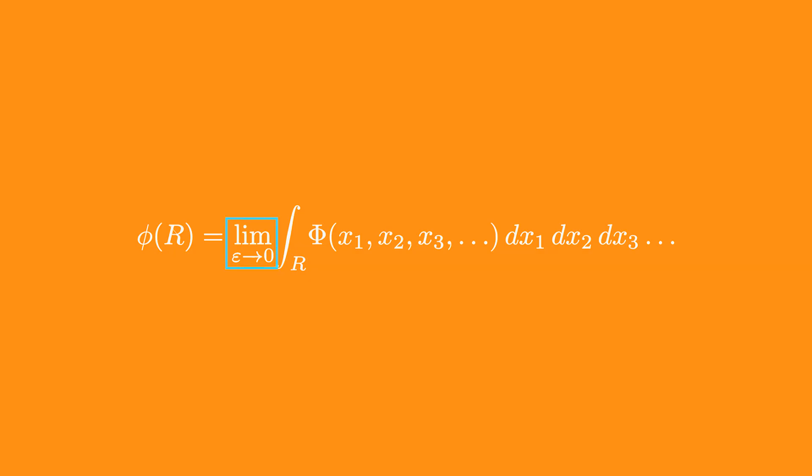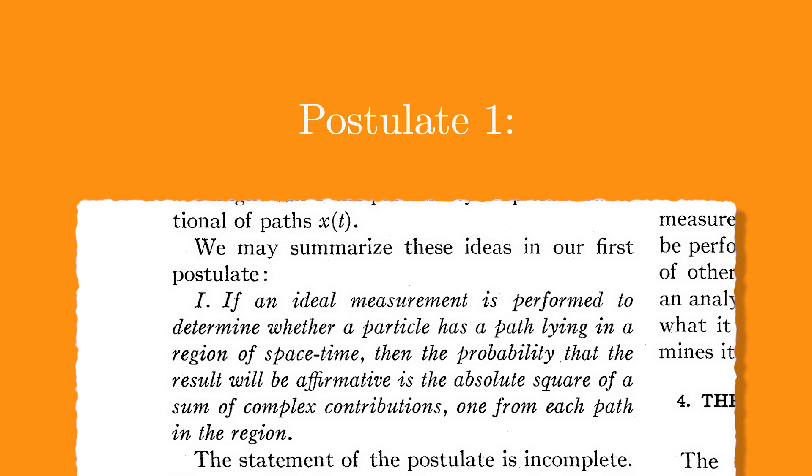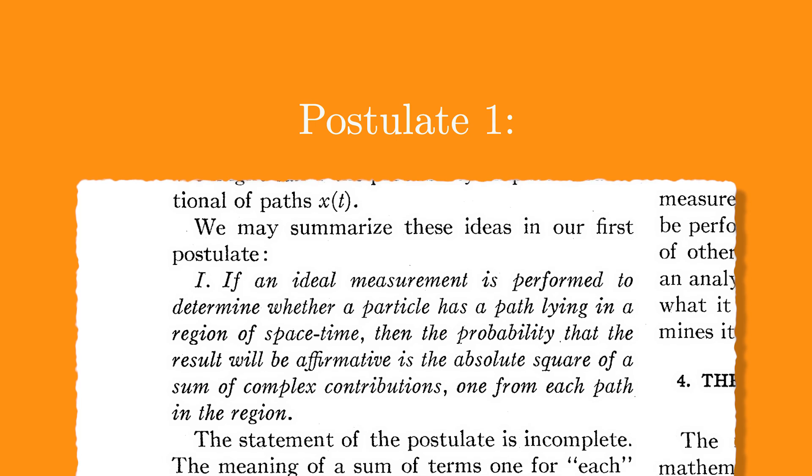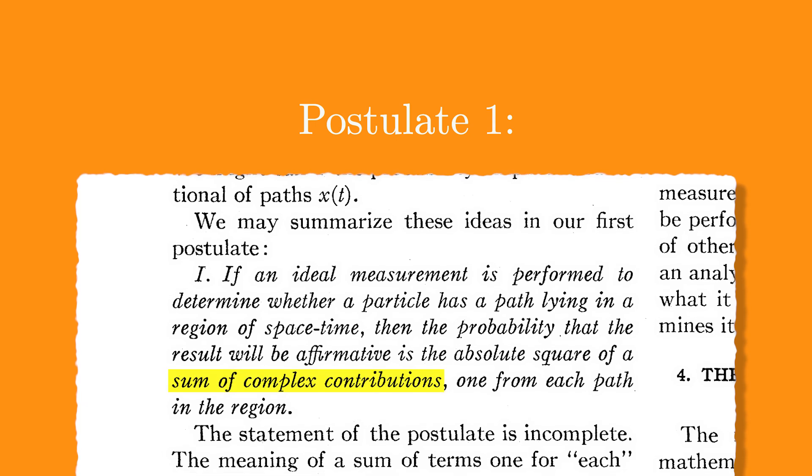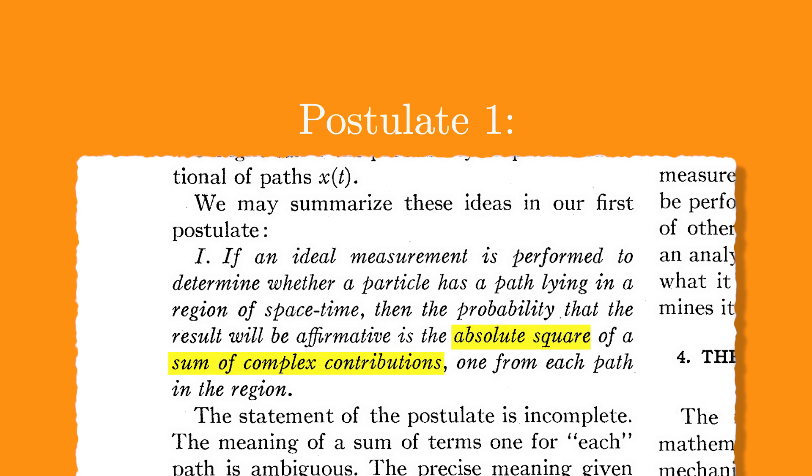Taking the limit as epsilon goes to zero, we are essentially characterizing this function phi to depend on the entire path, x of t, instead of the discrete values at a particular time. Upon this idea, Feynman came up with two postulates. The first one states that the probability of the entire path can be figured out by summing the individual probabilities and squaring the sum, much like all of quantum mechanics.